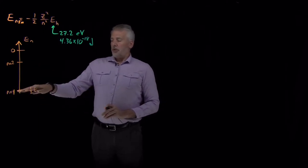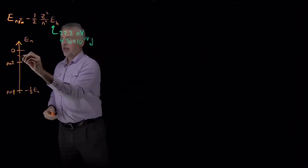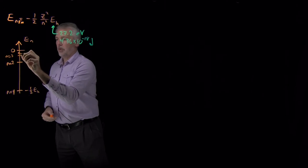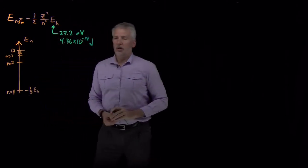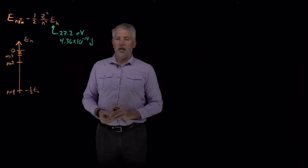If this was the N equals 1 state, N equals 2 is a quarter as large. The N equals 3 state is going to be 3 squared or 1 ninth as negative, so that's going to be somewhere around here. We're also going to have N equals 4, 5, 6 states. Those states get packed tighter and tighter together as we go to higher and higher N values.